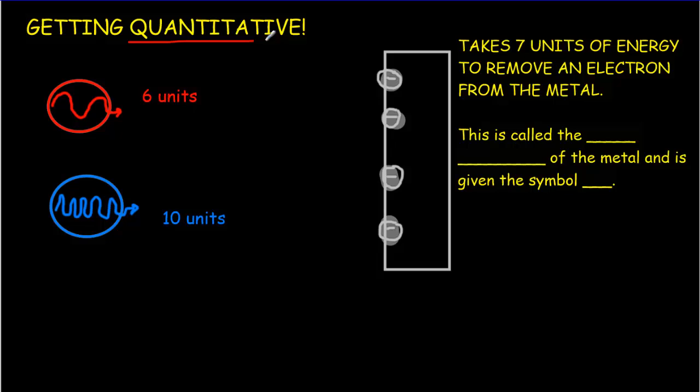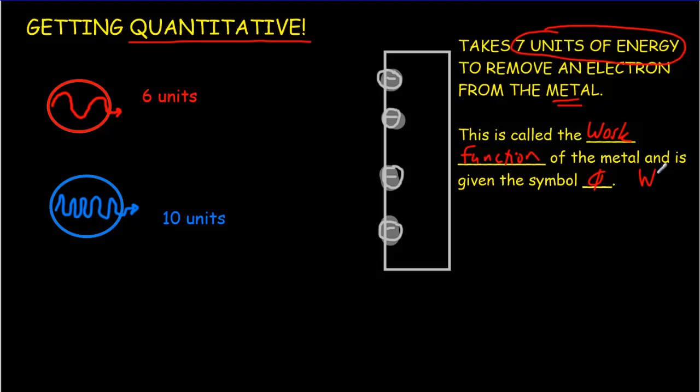Let's take a more quantitative look at the photoelectric effect — photons knocking electrons out of the metal. Using arbitrary units, let's say it takes seven units of energy to remove an electron from the metal. This number is called the work function of the metal, usually given the symbol φ (or capital W in some textbooks). It represents the bonding strength in the metallic lattice: you've got a free sea of electrons attached to a lattice of positive ions, and it takes a certain amount of energy to knock one out. That's the work function.